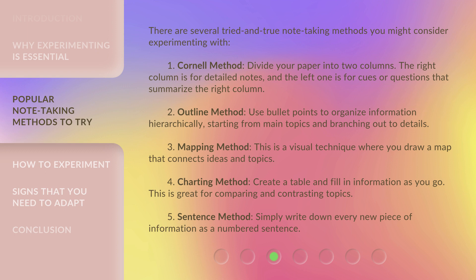Fourth, the Charting Method: create a table and fill in information as you go. This is great for comparing and contrasting topics. Fifth, the Sentence Method: simply write down every new piece of information as a numbered sentence.